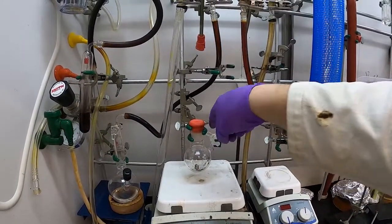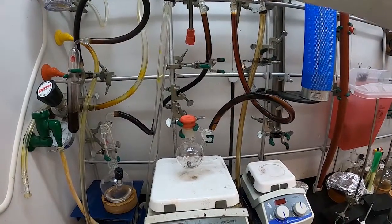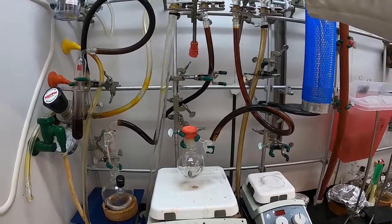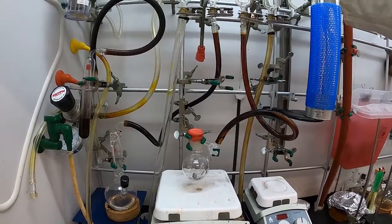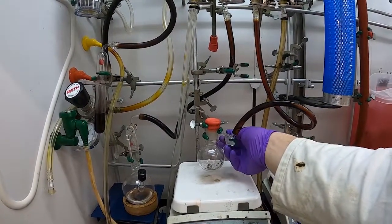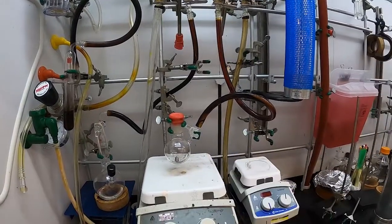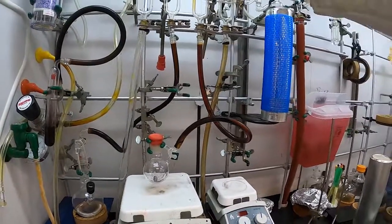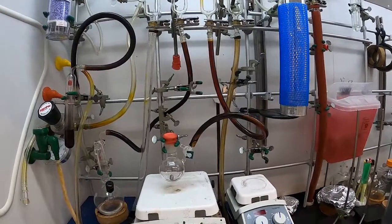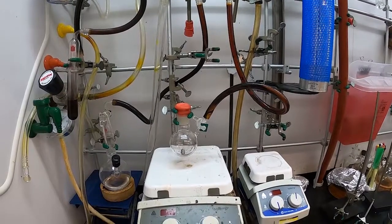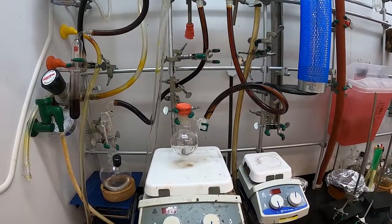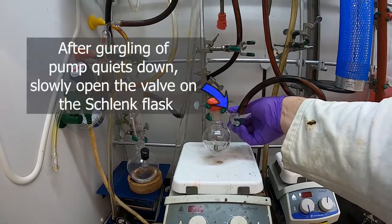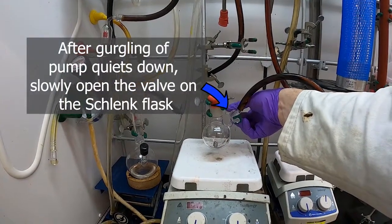So our key here is closed. So I'm going to open this to the vacuum. There we go. The gurgling of the pump should stop shortly. And here we go. And then once we've got vacuum in here, we can slowly open this key on our flask.